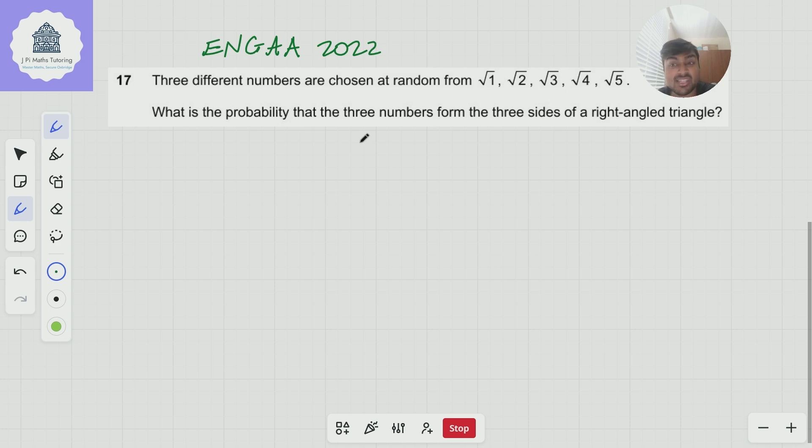We have three different numbers are chosen at random from root one, root two, root three, root four and root five. What is the probability that the three numbers form the sides of a right angled triangle? Okay cool let's have a look at this.